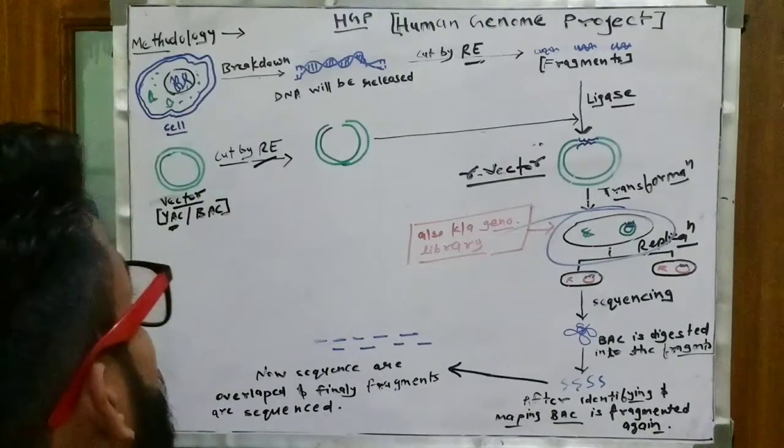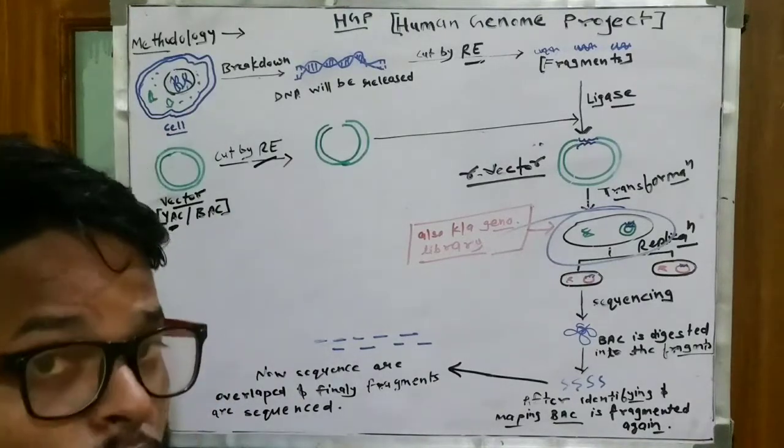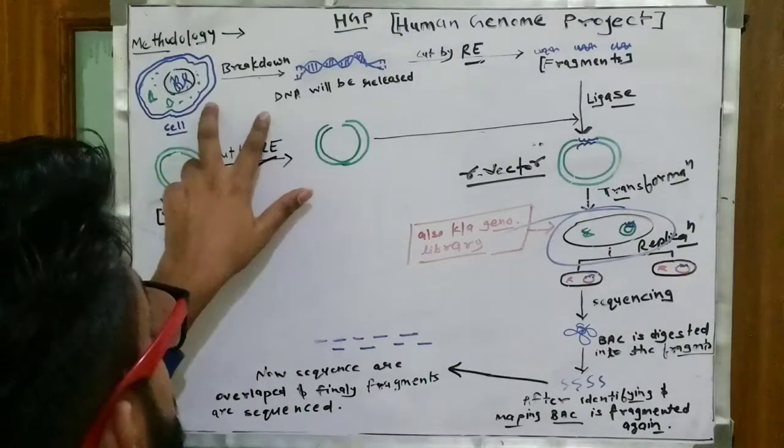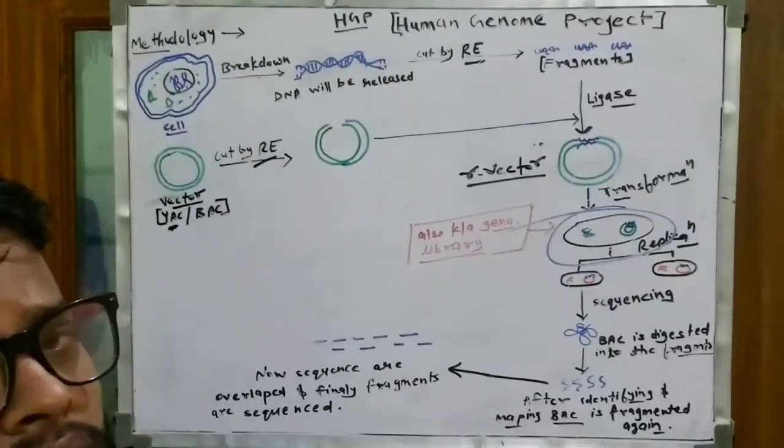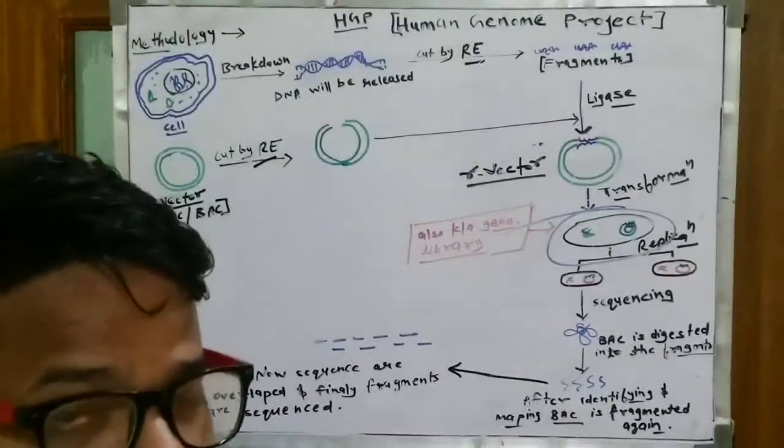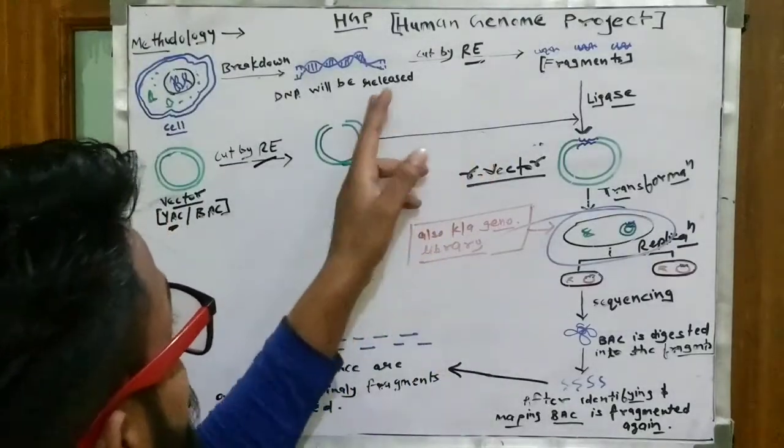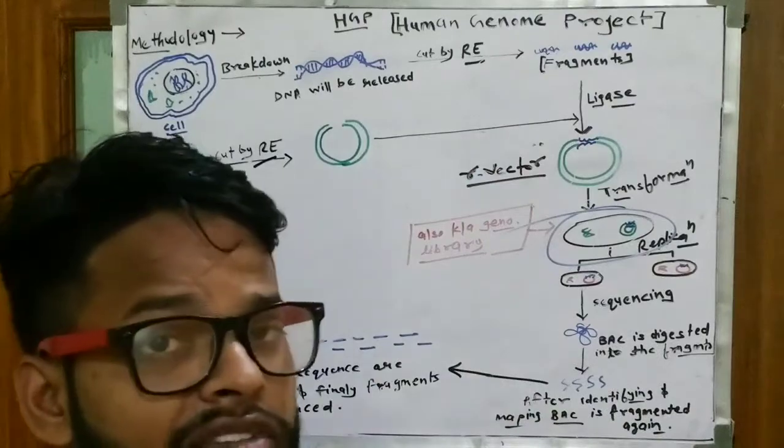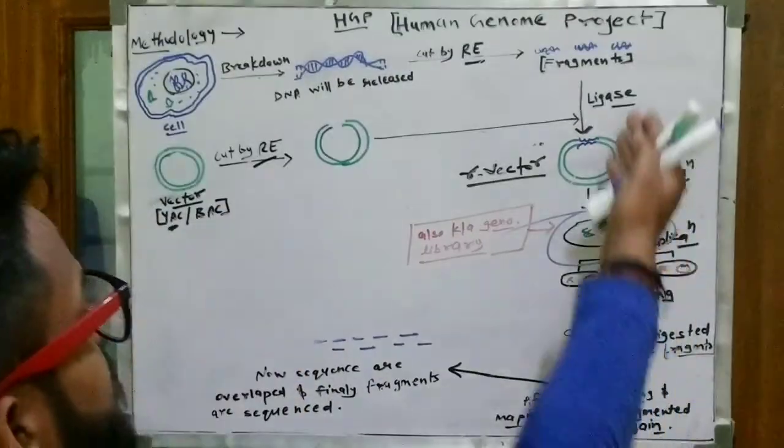Now we will break down by the homogenization method. We will break down our cells which will be released outside. Now we will cut this DNA with restriction endonuclease. After restriction endonuclease, it will be cut and some fragments will be made.